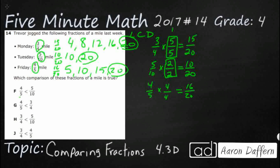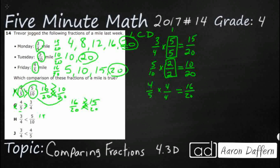I'm going to rewrite the answer choices F, G, H, and J with my new fractions. Answer F says 4 fifths — that's 16 twentieths — is less than 5 tenths — that's 10 twentieths. That is incorrect; 16 twentieths is greater than 10 twentieths. Answer G says 4 fifths (16 twentieths) is less than 3 fourths (15 twentieths). No — 16 twentieths is greater than 15 twentieths, so that's still incorrect. Answer H says 3 fourths (15 twentieths) is less than 5 tenths (10 twentieths). Not even close — 15 twentieths is greater, so that's incorrect too.